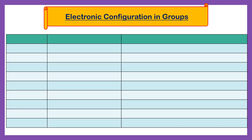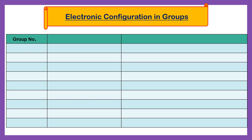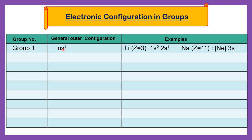Now see examples of groups and their electronic configurations. Group number 1 has general outer electronic configuration ns1, where n is the shell number (1, 2, 3, 4 and so on). For example, lithium (atomic number 3) has outer electronic configuration 2s1 — s subshell having one electron. Sodium (atomic number 11) has 3s1 — s subshell having one electron. Both have the same general outer electronic configuration; only the shell is different.